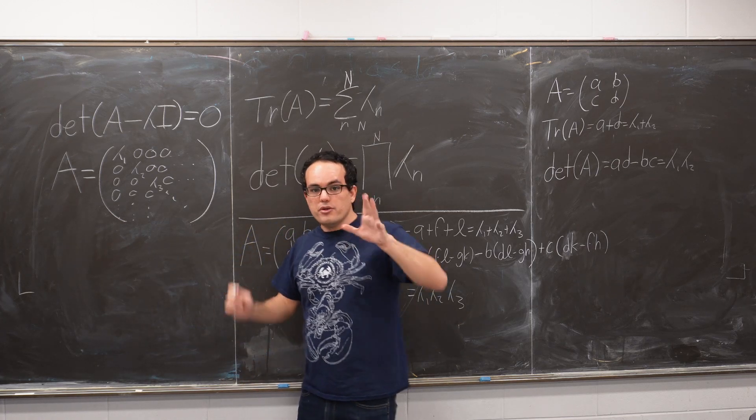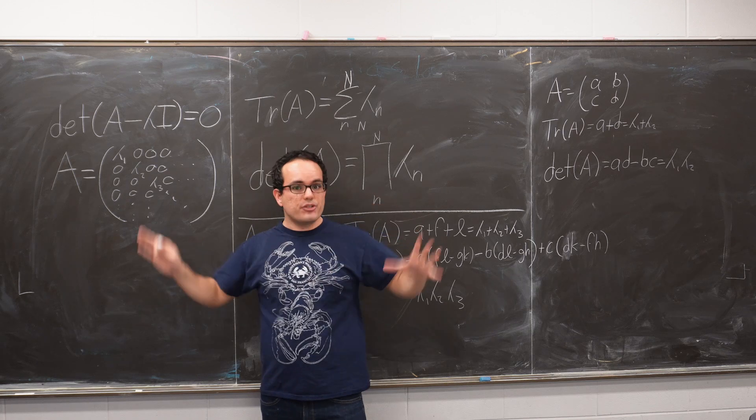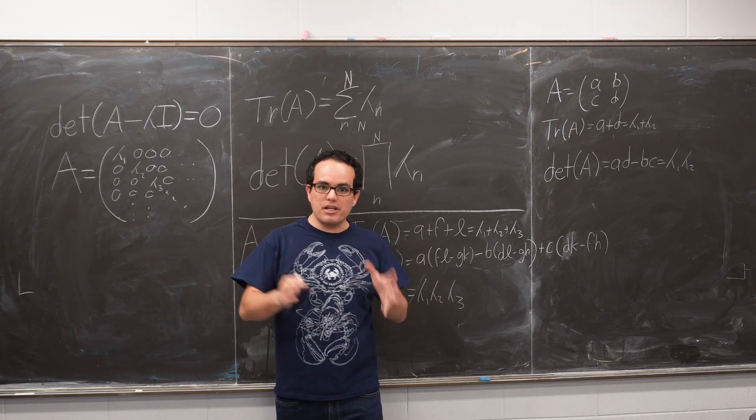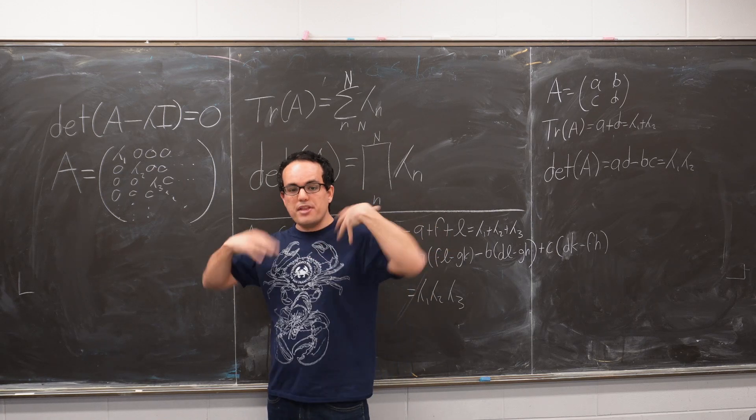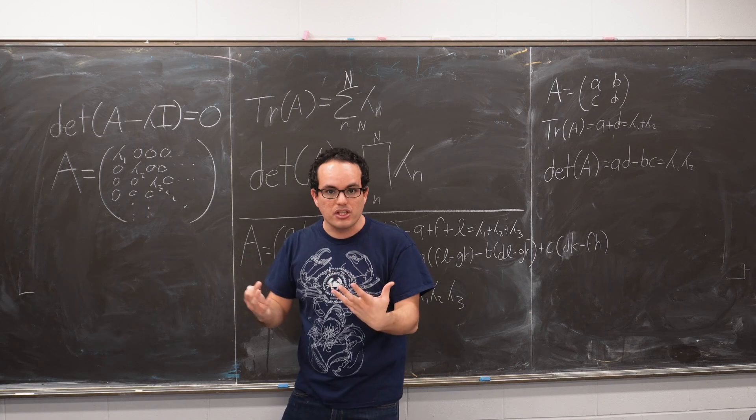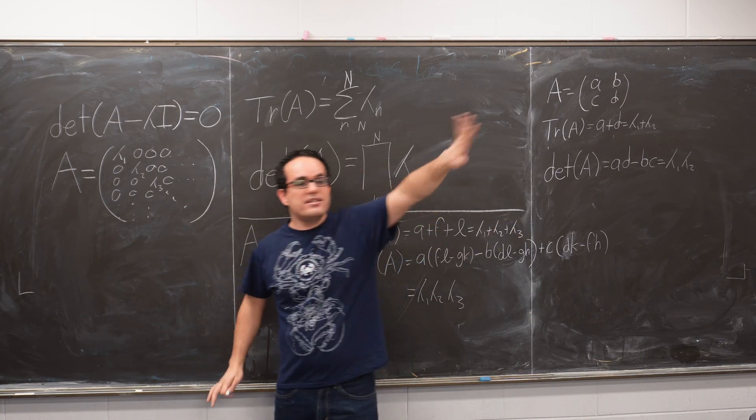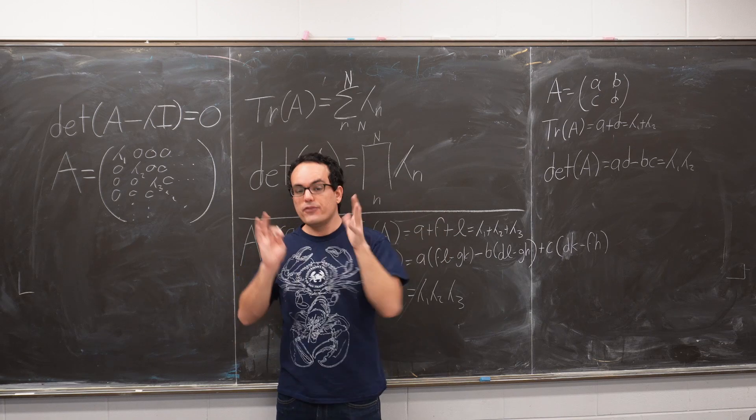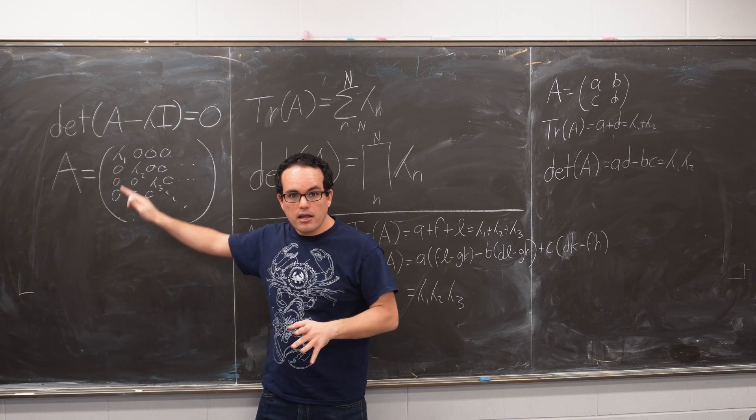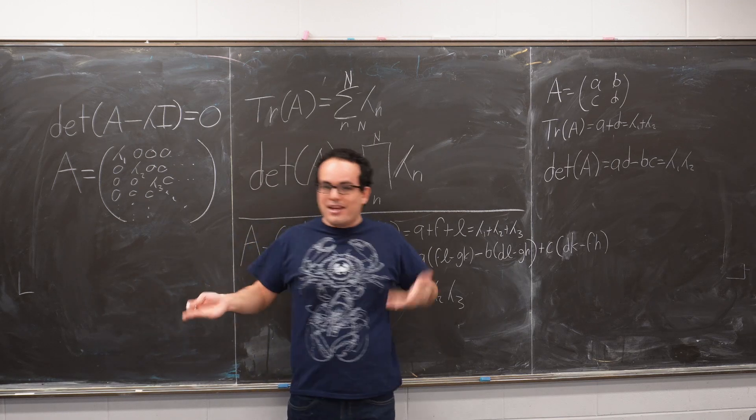But here's the thing: what you need to know is that any matrix that you have can be written as a diagonal matrix, because the way you write the matrix depends on the basis vectors that you are using. And there is some set of basis vectors out there that if you used them to write your matrix, it would be diagonal. And those vectors are actually the eigenvectors.